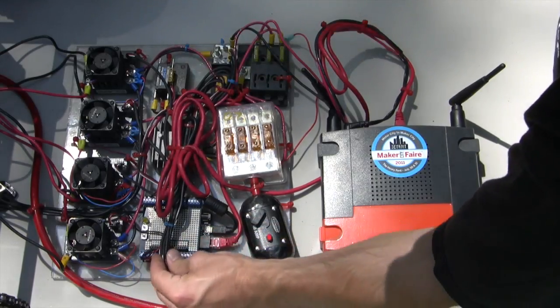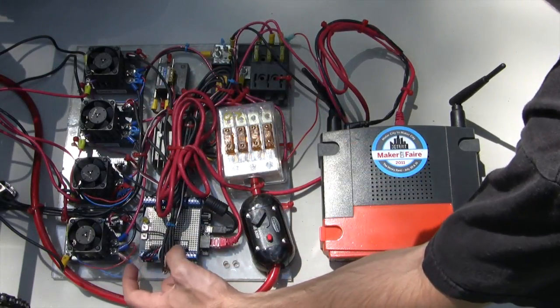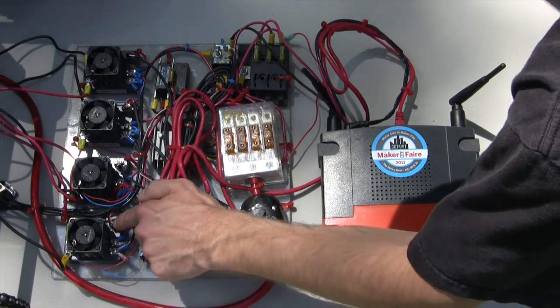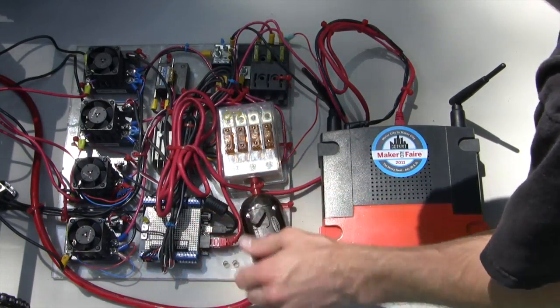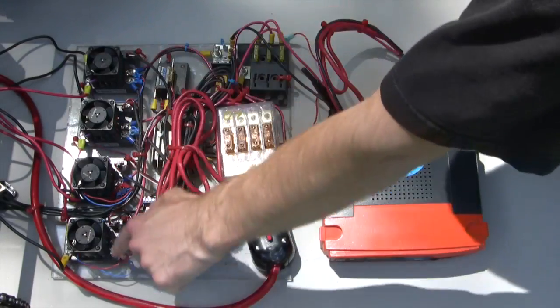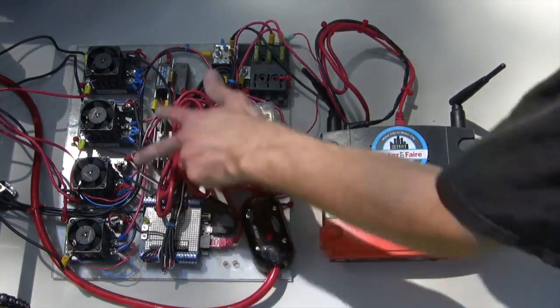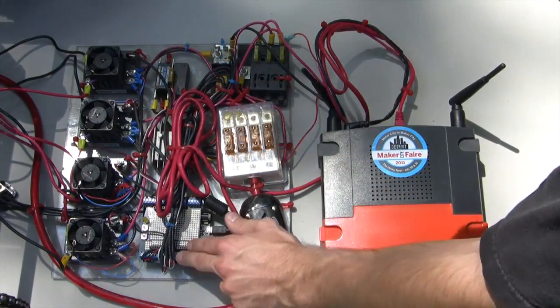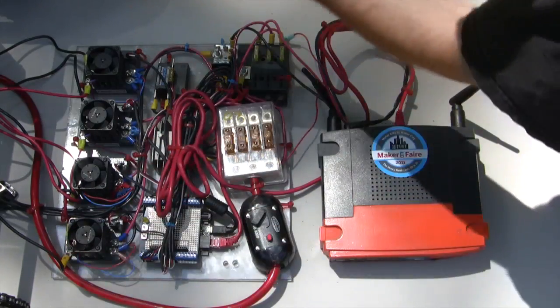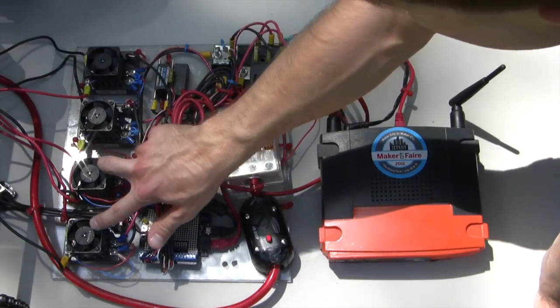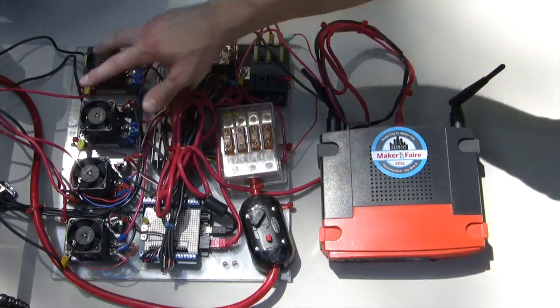You can see we've got all of our data lines coming in here. The grounds from all of the speed controllers are getting tied into the ground of the Netduino. Then we also have these little red wires, which go to the 5 volts in the Netduino. The Netduino is actually running at 5 volts, so this is providing these signals with 5 volts. And then we have two of these white wires being tied together in a Y, and two of these white wires being tied together in a Y. So we have four motors total on our robot, and we have two of them tied together for the left drive, and two of them tied together for the right drive. So this sends the same exact signal to these two, and the same exact signal to these two. So this would be our left drive and our right drive. So it's tank drive.